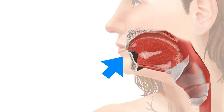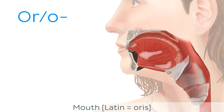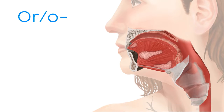The oral cavity. Let's start with the root word 'or' or 'oro' with the O at the end, which comes from the Latin 'oris', meaning mouth.